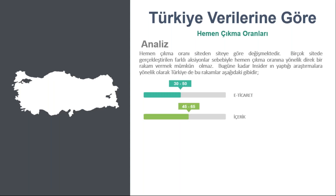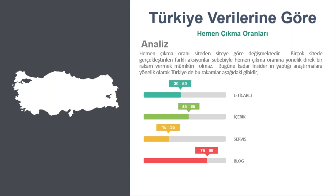İçerik sitelerinde bu oran %45 ile %65 arasında değişkenlik gösteriyor. Bunun e-ticaretten daha yüksek olmasının en büyük sebebi sosyal medya paylaşımlarına tıklayan kullanıcıların direkt olarak bir haber sayfasına gelmesi ve oradan bounce etmesidir. Servis siteleri %15 ile %35 ile en düşük oranı veriyor. Blog siteleri ise %75 ile %99 civarında; çünkü e-ticaret sitelerindeki binlerce ürün sayfası yerine blog üzerinde sınırlı sayfa bulunuyor. Üyelik sitelerinde ise %35 ile %55 arasında bir hemen çıkma oranı görülüyor.